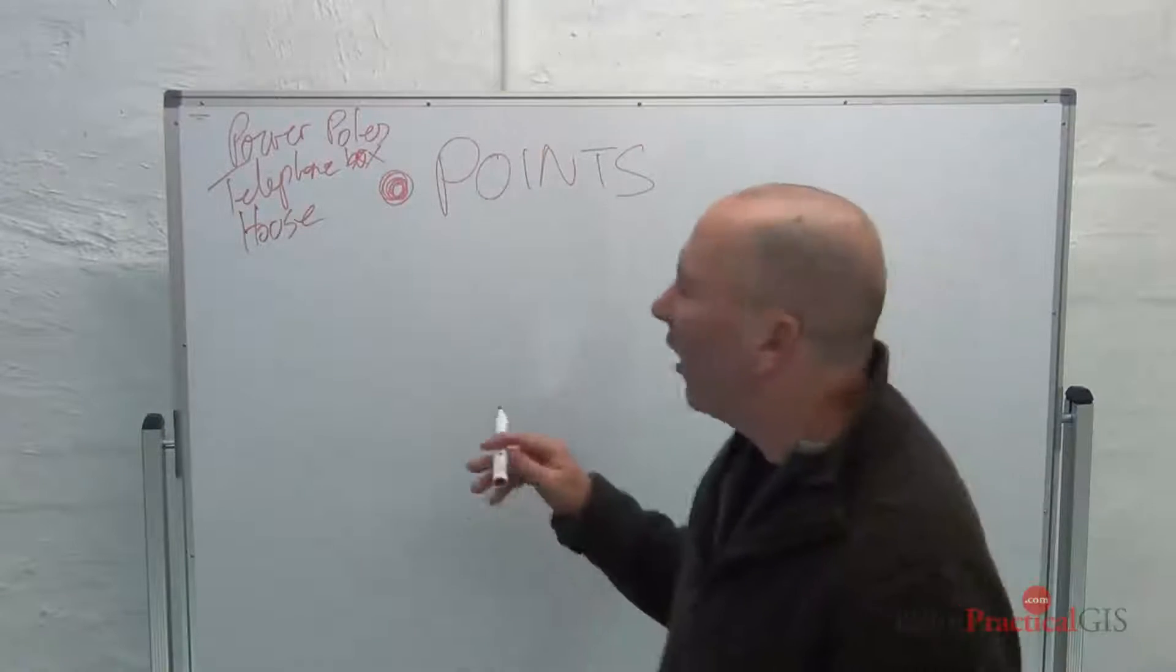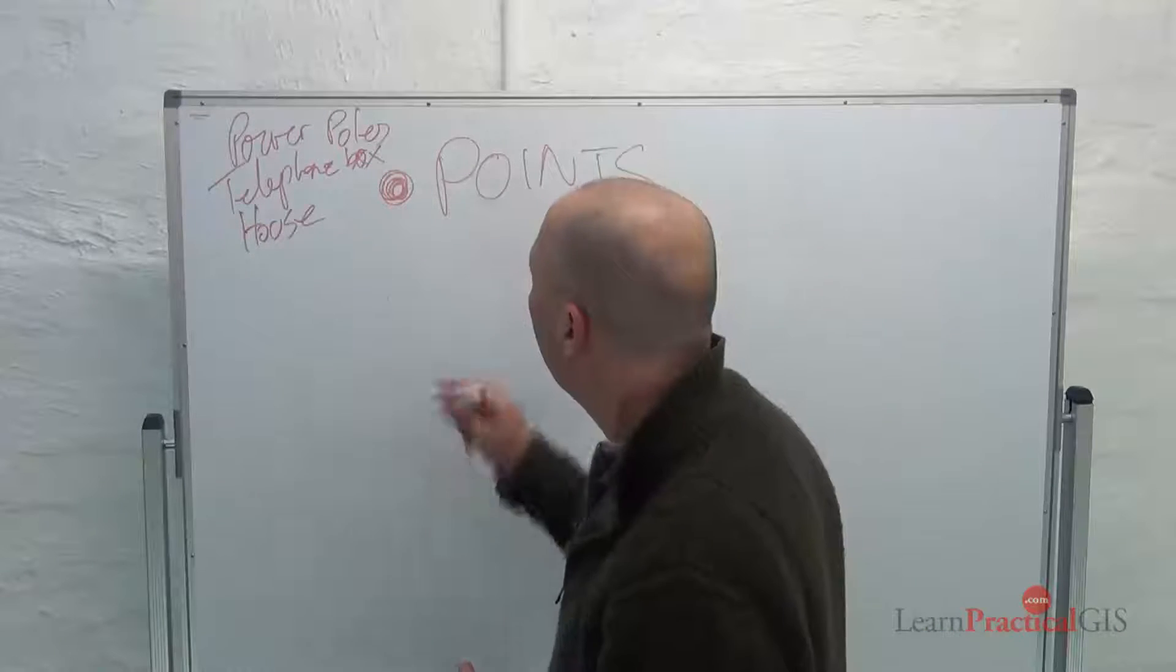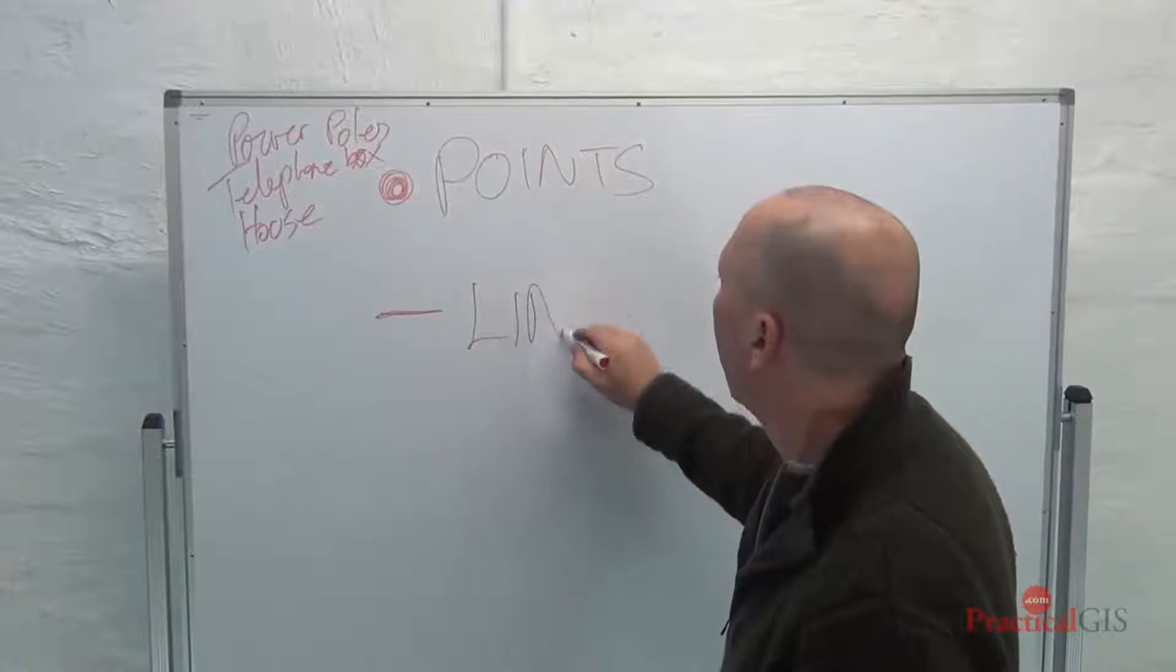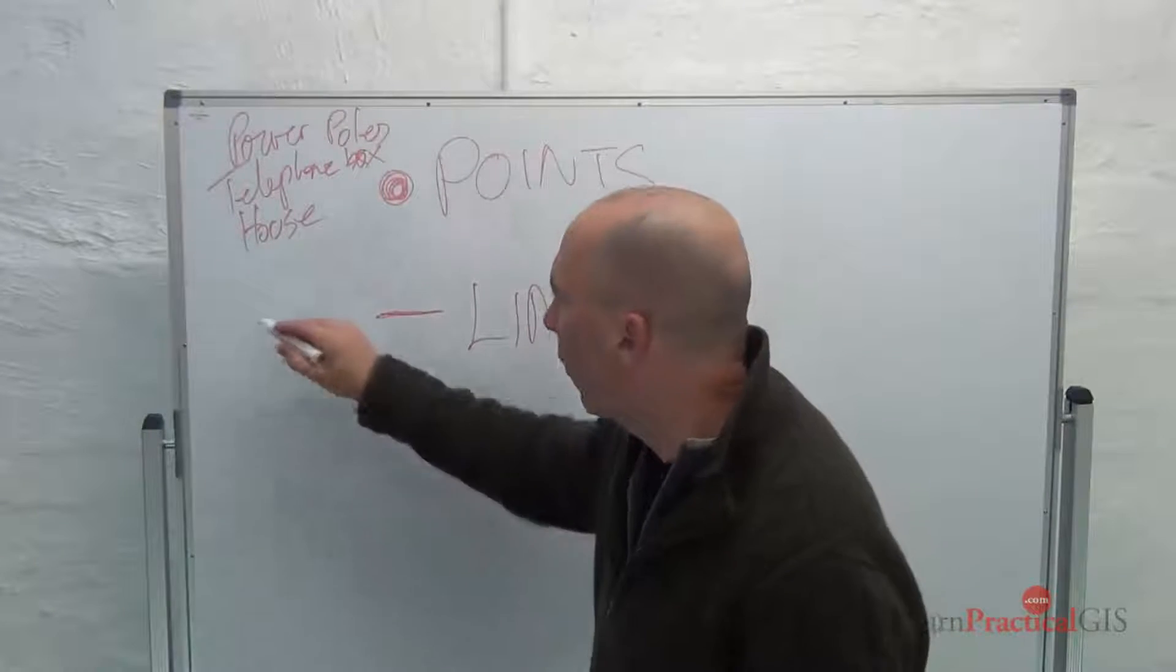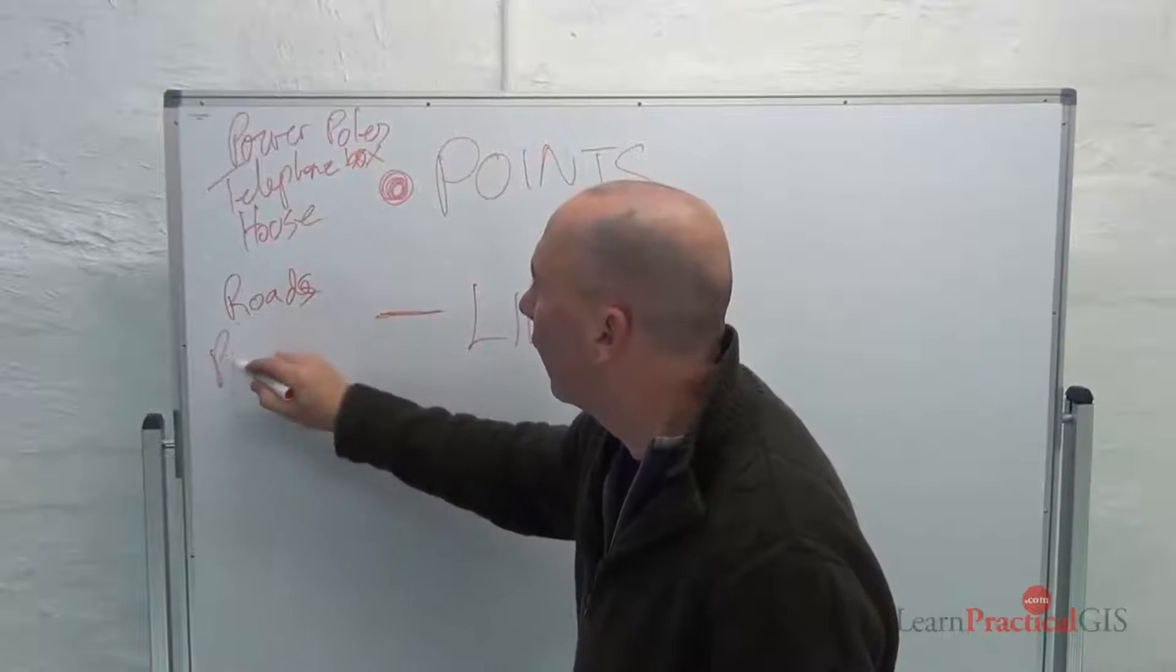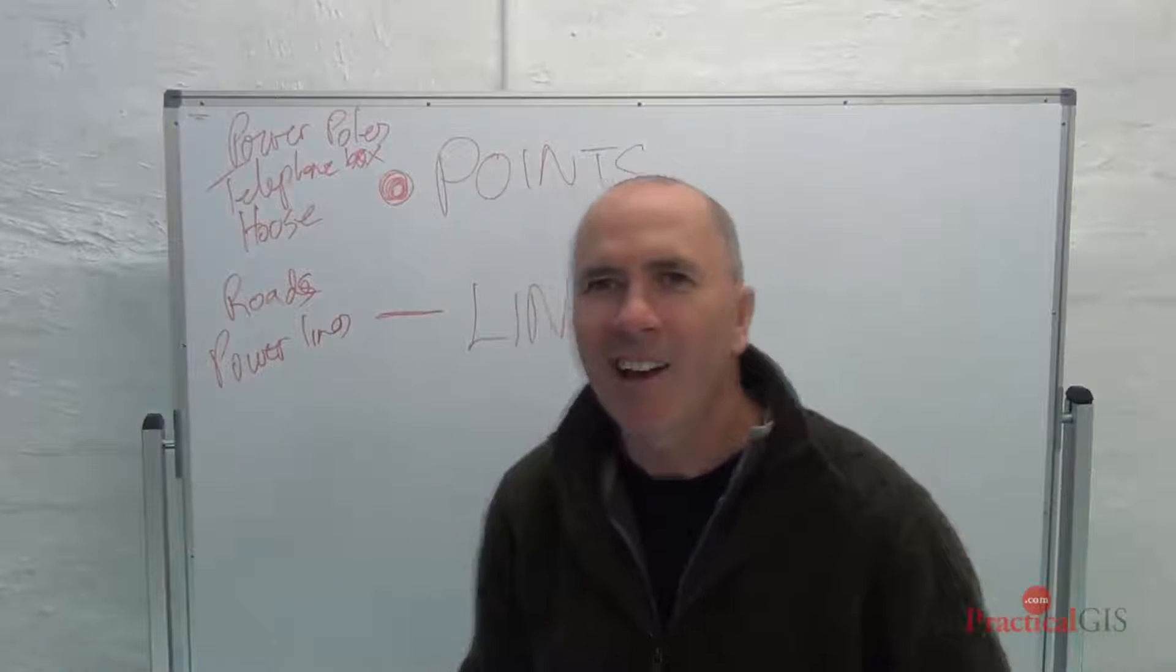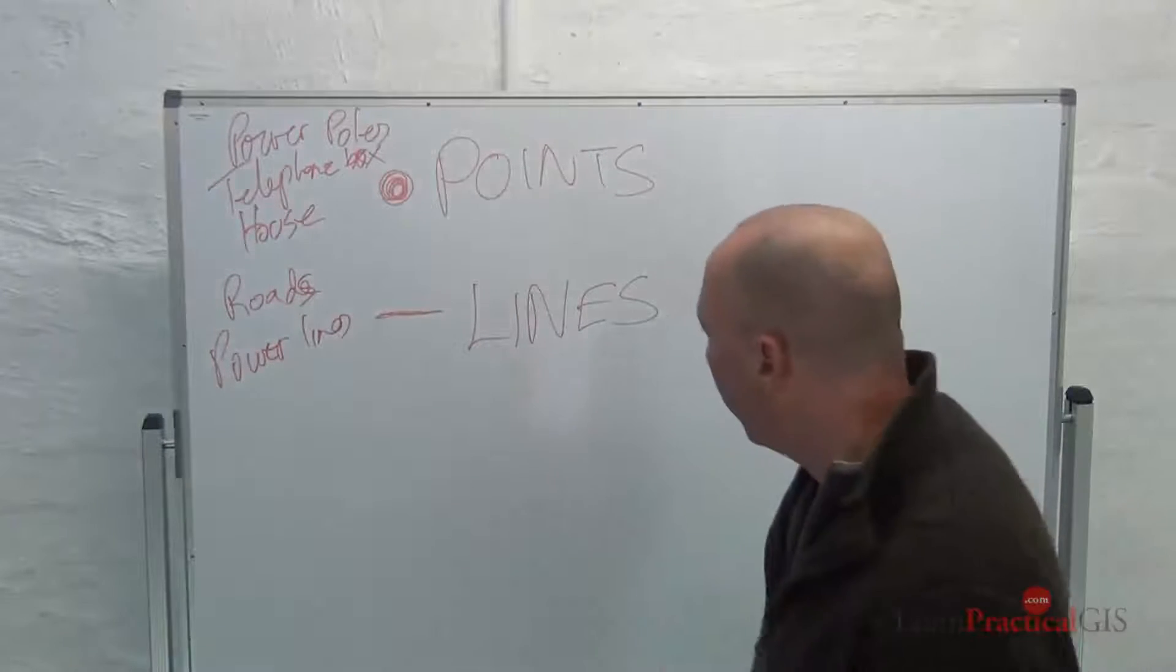We have this other construct that's not really so relevant for this type of housing analysis, but these are lines. Lines are things like roads, power lines. You can tell I don't write very much. I'm mostly on the keyboard, and power lines. Not so relevant to what we're talking about today.